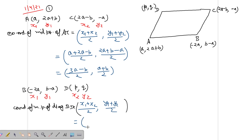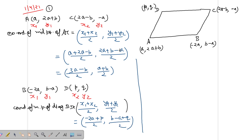So the BD midpoint coordinates are (-2A + P)/2 and (B - A + Q)/2. Now one important point: we know that the diagonals of a parallelogram bisect each other.